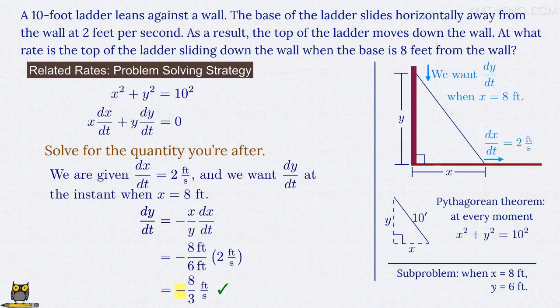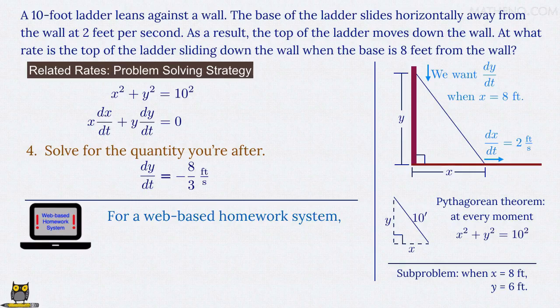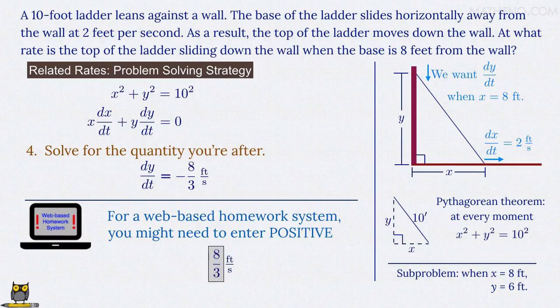That said, here's a warning. If you are using a web-based homework system, there's an issue that often causes students a lot of frustration. Depending on how the question got coded into the problem database, you might need to enter a positive value instead, so positive 8 thirds feet per second, because sometimes they've already taken the negative sign into account when they asked how fast the ladder is sliding down the wall, since the word down already implies a negative value. Just depends on what the coder entered as the sign of the answer when they put the problem in, and unfortunately they're inconsistent about that. So the system may mark you wrong for this simple reason, and then not give you any useful feedback so you know what the problem is.